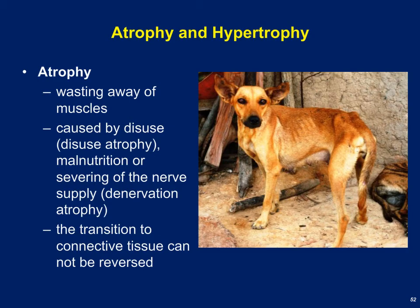Two important terms for the muscular system are atrophy and hypertrophy. Atrophy means a wasting away of an organ — muscle atrophy can occur due to malnutrition or disuse. When it happens, the muscle tissue is permanently lost and converted into connective tissue. Even if the animal is fed and regains weight, the muscle fibers lost cannot be regained. The remaining fibers can grow larger to compensate, but fibers lost due to atrophy are gone for good.